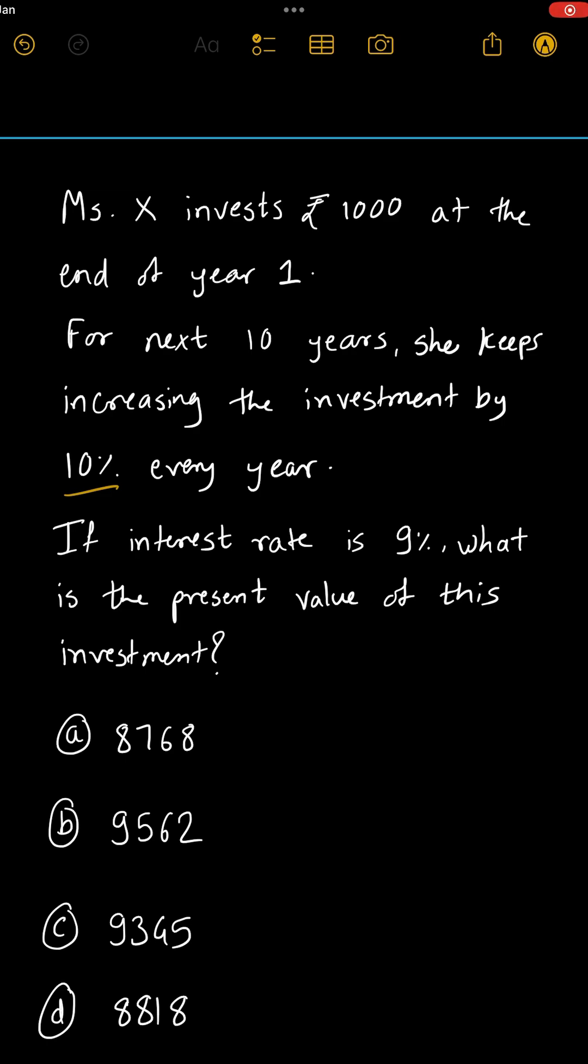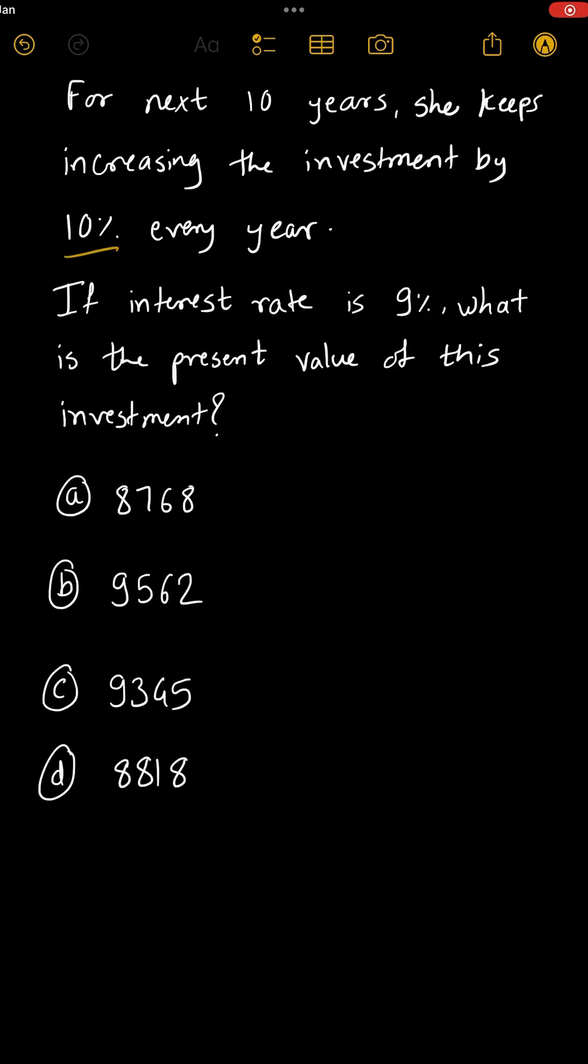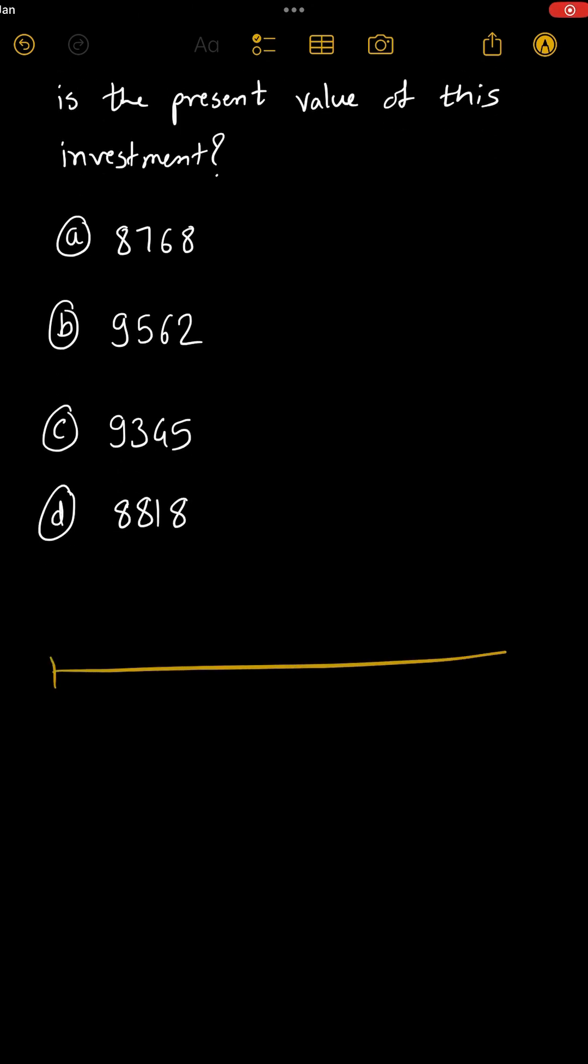Now this is not exactly an annuity. This is kind of like a growing annuity. Why? Because in the first year, she's investing 1000, then in the next year 1000 plus 10%, that is 1000 × 1.1, then again plus 10%, so 1000 × 1.1 × 1.1 which is 1.1², and so on up to 10 years.